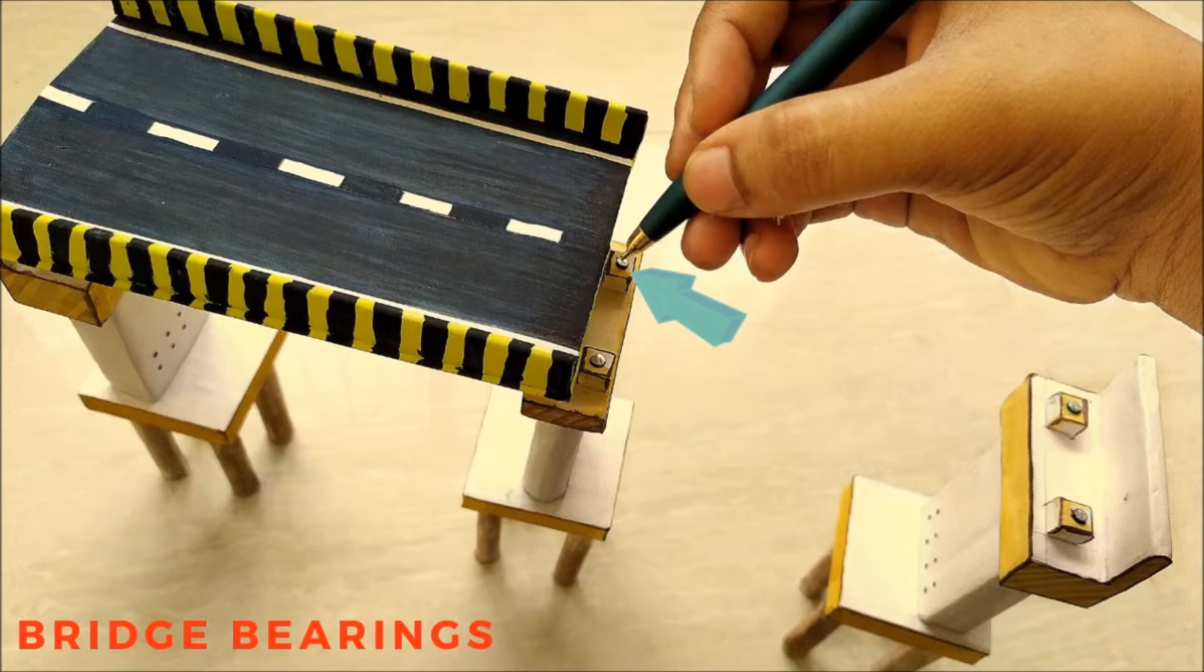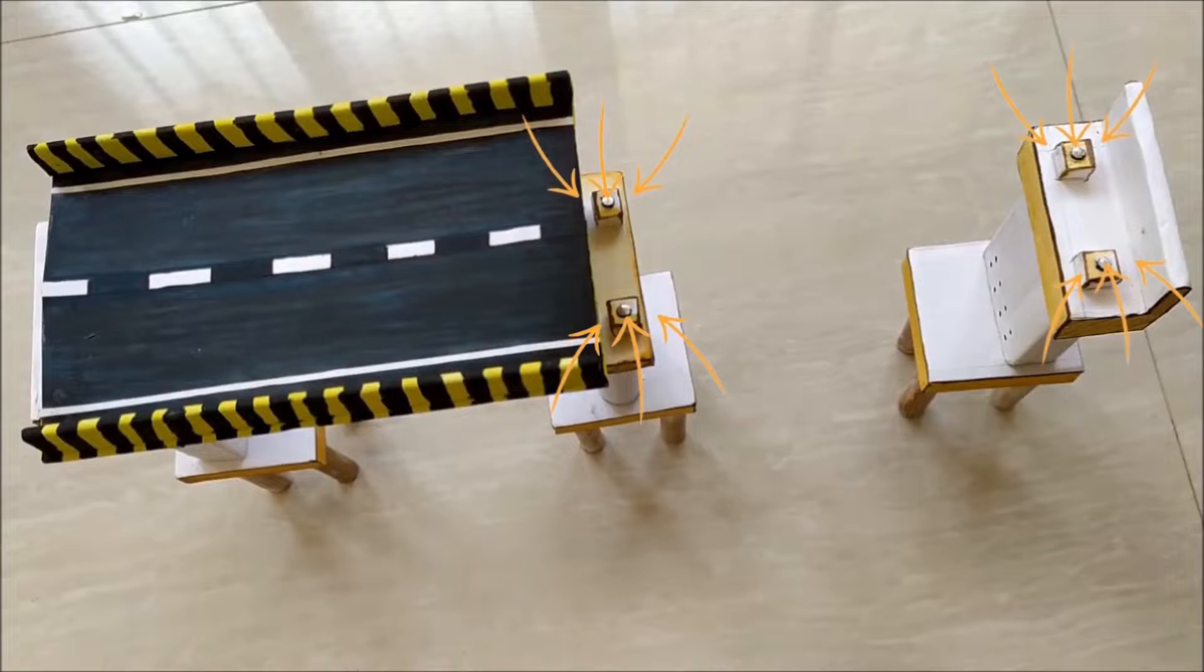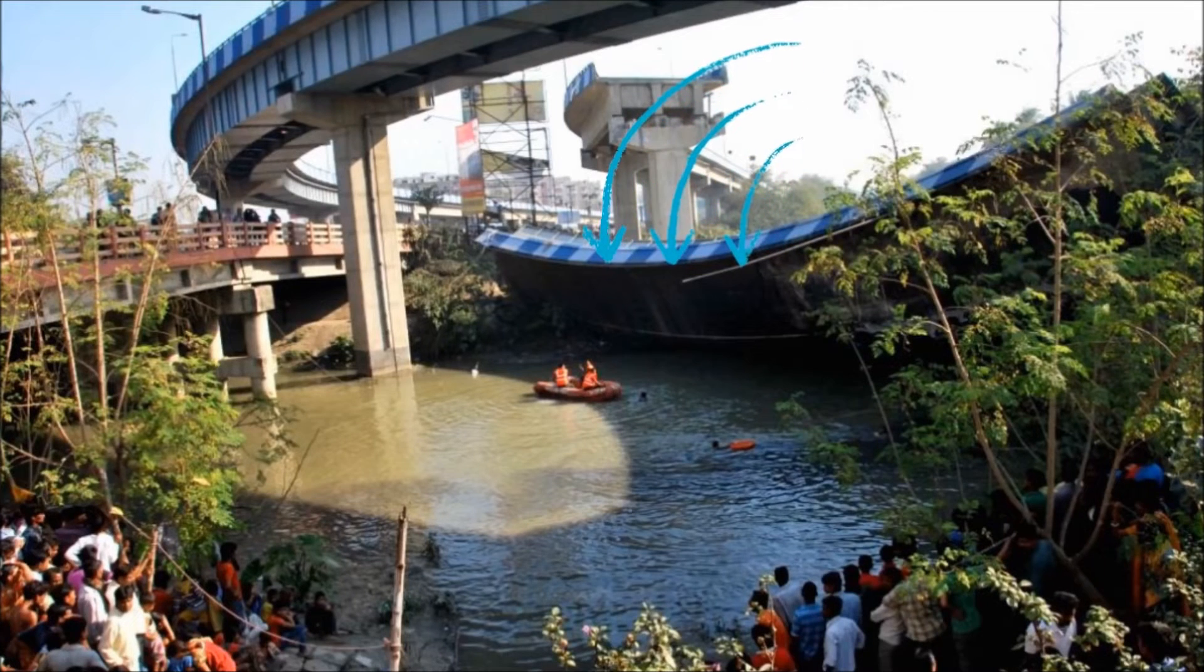Bearings are the critical elements of the overall bridge system. It's a small part of the overall structure cost, but if they function improperly, they can potentially cause a failure of the bridge structure.